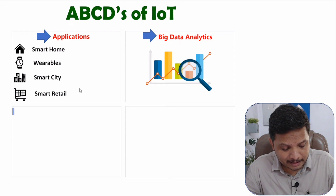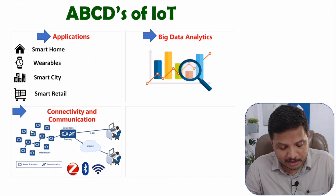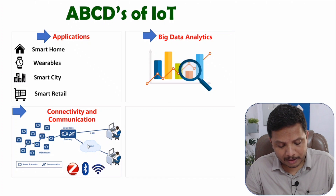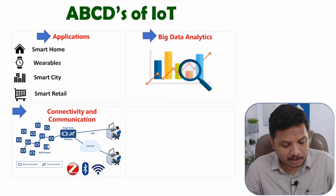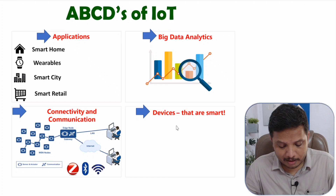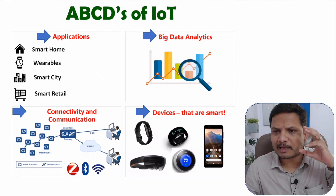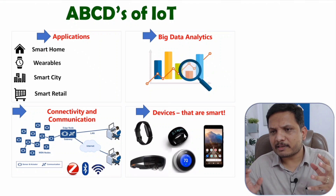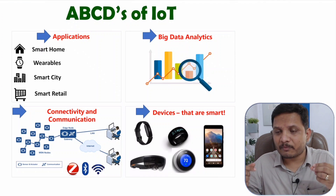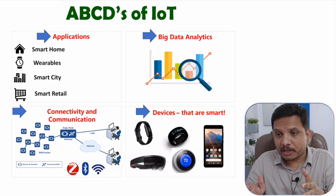C stands for Connectivity and Communication. Many devices are connected via internet and based on that connection, optimization is possible. One gateway connects many devices to the internet where varieties of algorithms can provide suitable solutions to the user. D stands for Devices that are smart — like mobile phones, smartwatches, and smart sunglasses. These devices are getting smarter because of IoT, as sensors send data to the internet, allowing us to access practical situations in the best possible manner.